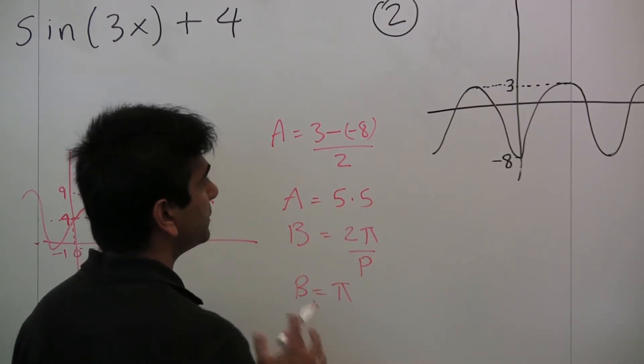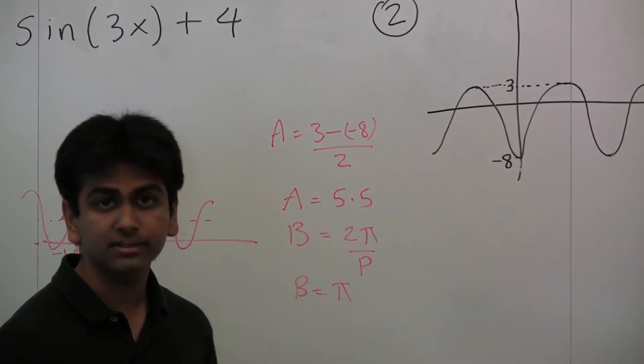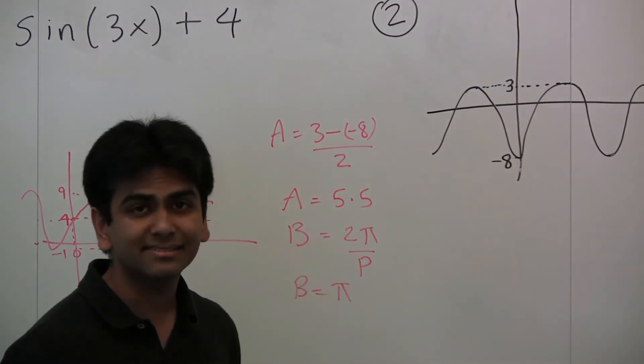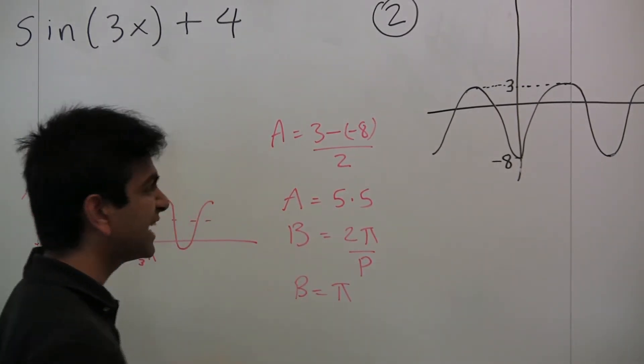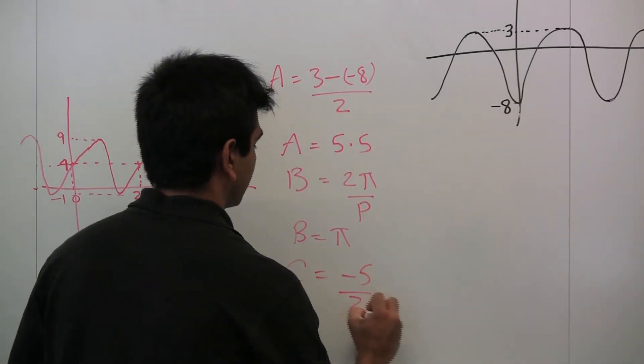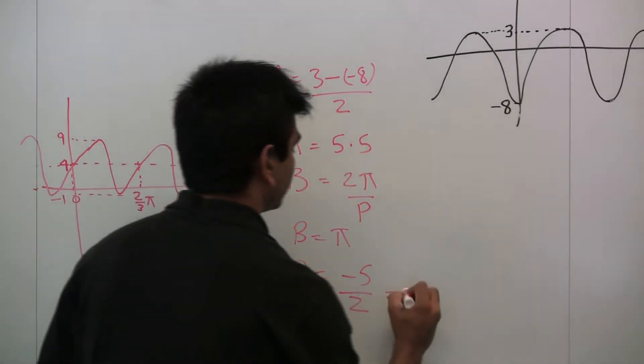In this case, the max plus min divided by 2 would be 3 plus negative 8 divided by 2. That's effectively 3 minus 8 over 2, so that's negative 5 over 2, which is negative 2.5.